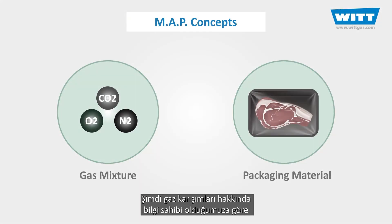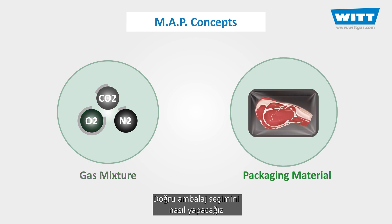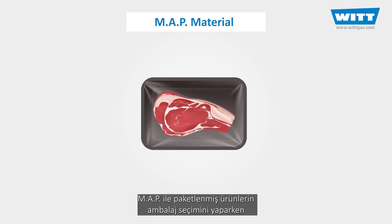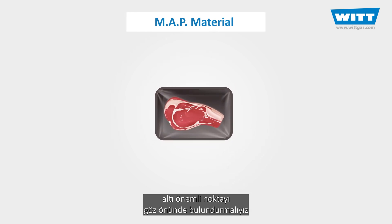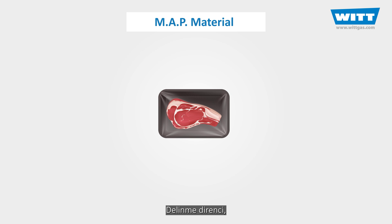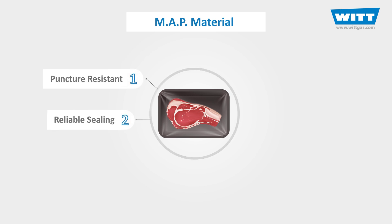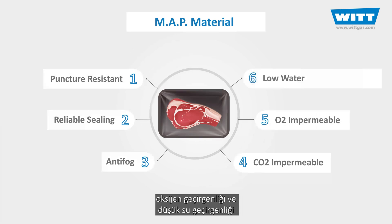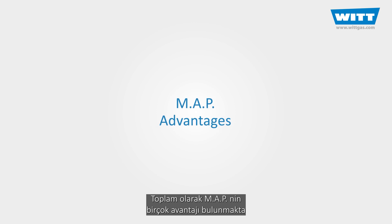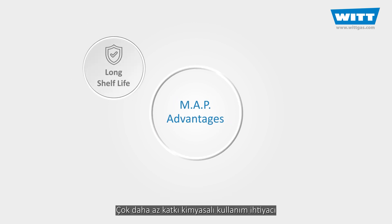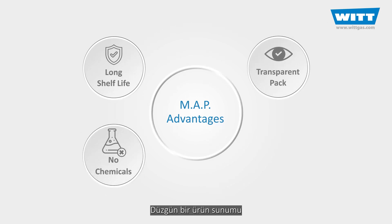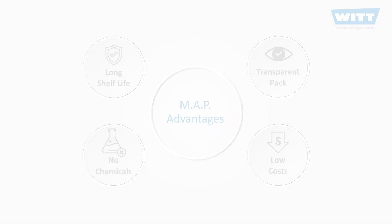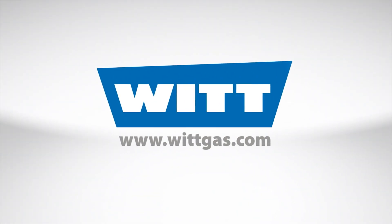Now that we've got familiar with the gas mixture concepts, let's see how we select the best packaging material, as it's essential to maintain the quality and safety of MAP foods. There are six main characteristics to consider when selecting packaging material for modified atmosphere packed foods: resistance to puncture, sealing reliability, anti-fogging properties, carbon dioxide impermeability, oxygen impermeability, and low water transmission rate. All in all, there are lots of benefits of using MAP — increased shelf life, little or no need for chemical preservatives, improved presentation, clear view, and reduction in production and storage costs.